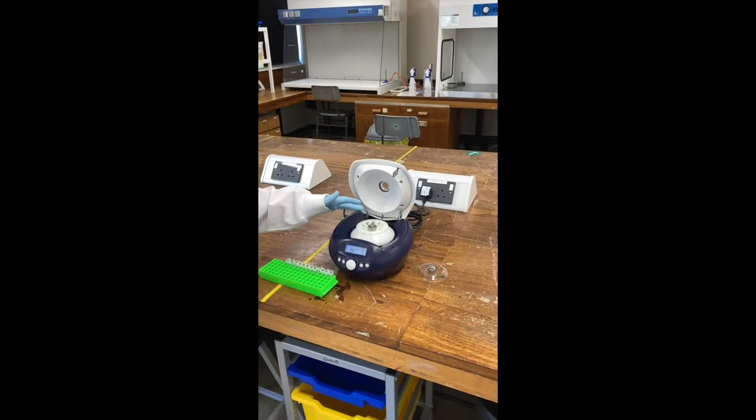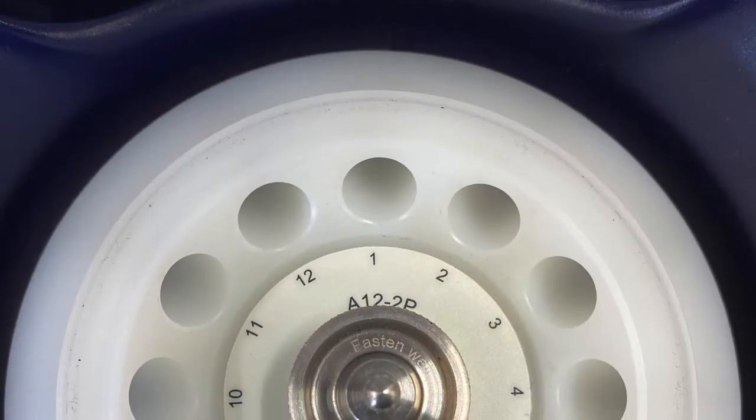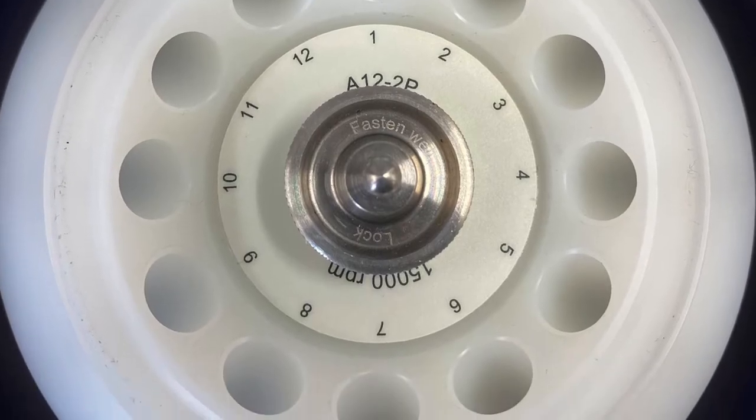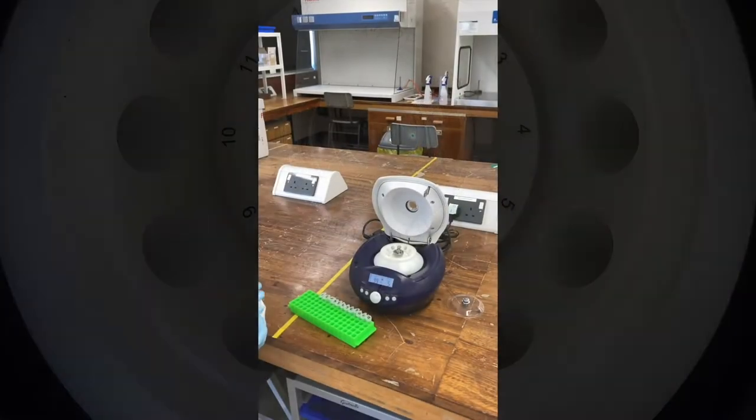The first thing you'll notice is the various holes within the centrifuge. This one will go up to 12, they're the different positions you can put samples in. The most important thing when you're using a centrifuge is to make sure that it's balanced.